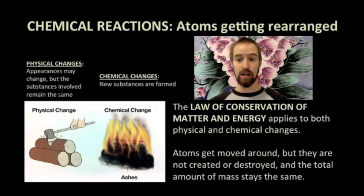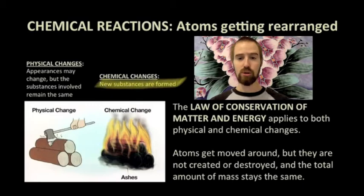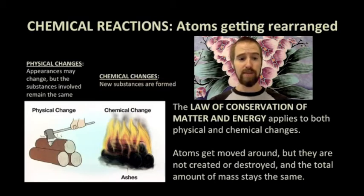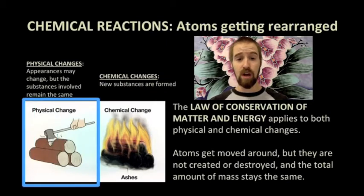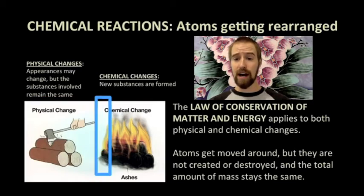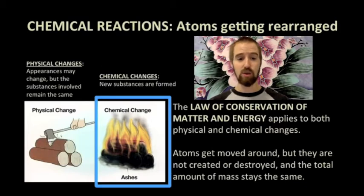Unlike physical changes, in which the appearance of a substance may be altered while the substance itself remains the same, chemical changes result in the production of a new substance that was not present before. For example, if you chop down a tree, that's a physical change because you started with wood and you ended with wood — all that changed was that you chopped it into smaller pieces. However, if you burn that wood in a fire, that's a chemical change because the wood is transformed into new substances.